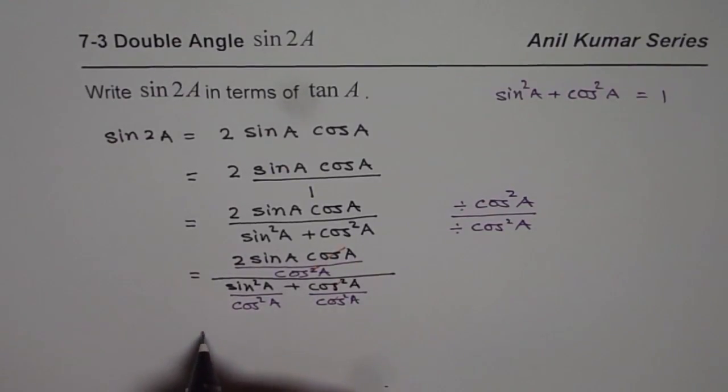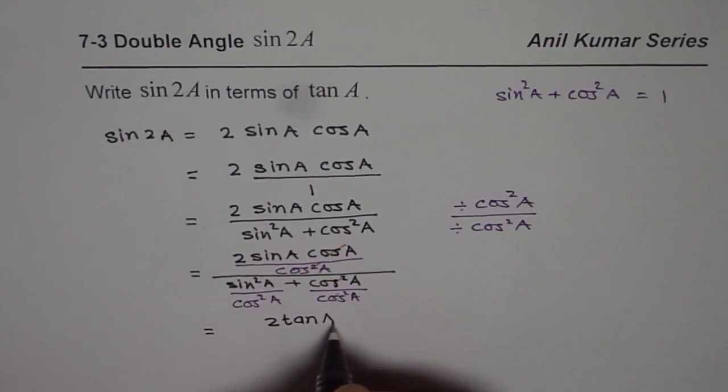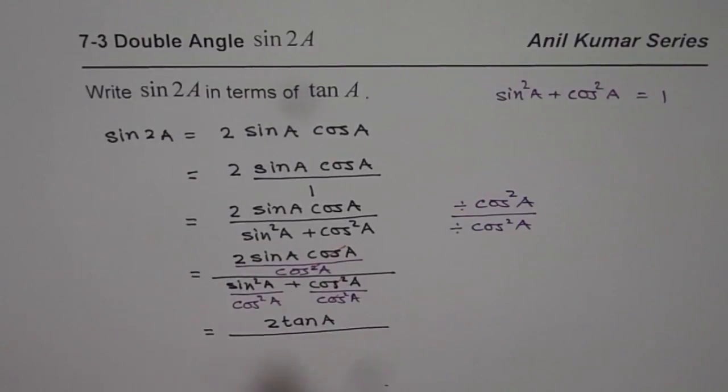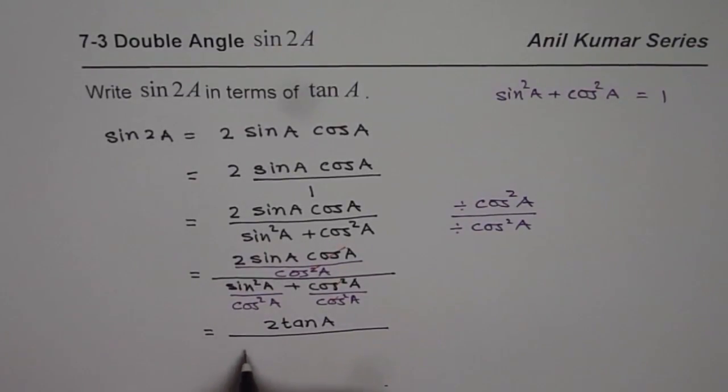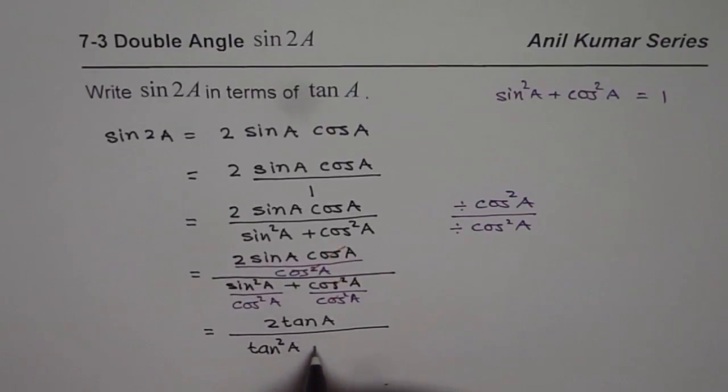And therefore, I can write this as 2 tan A over sin square A over cos square A is tan square A plus 1.